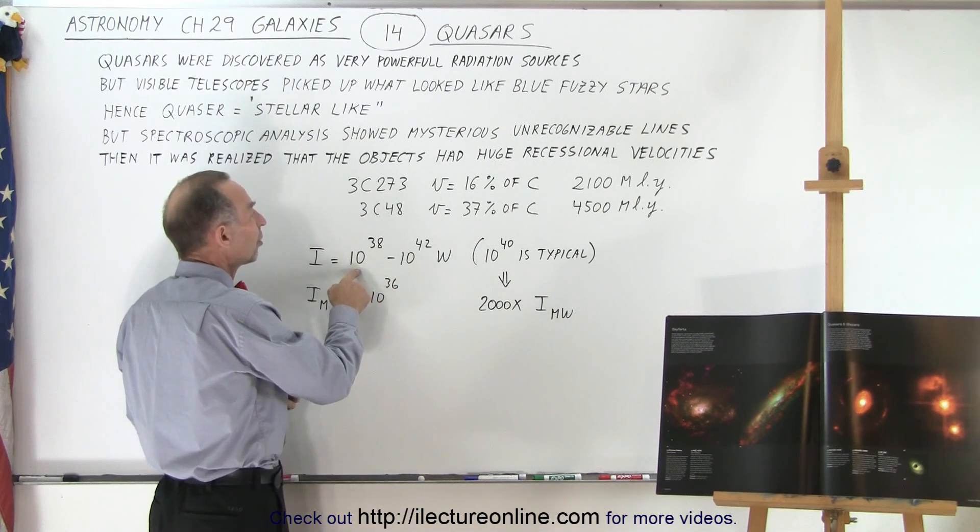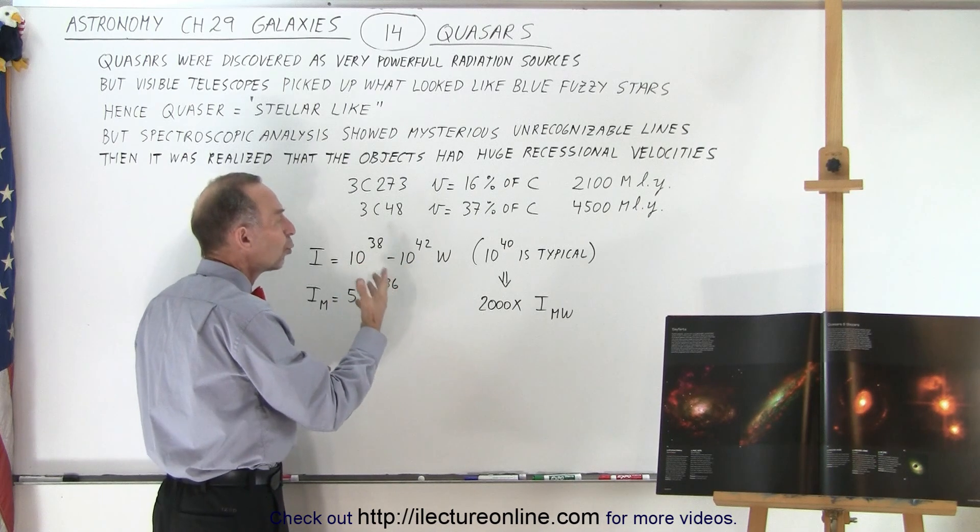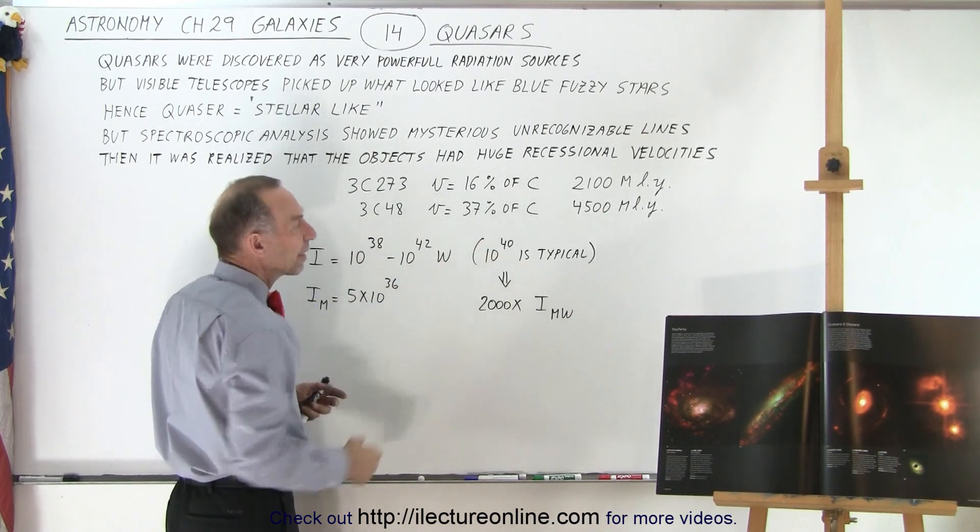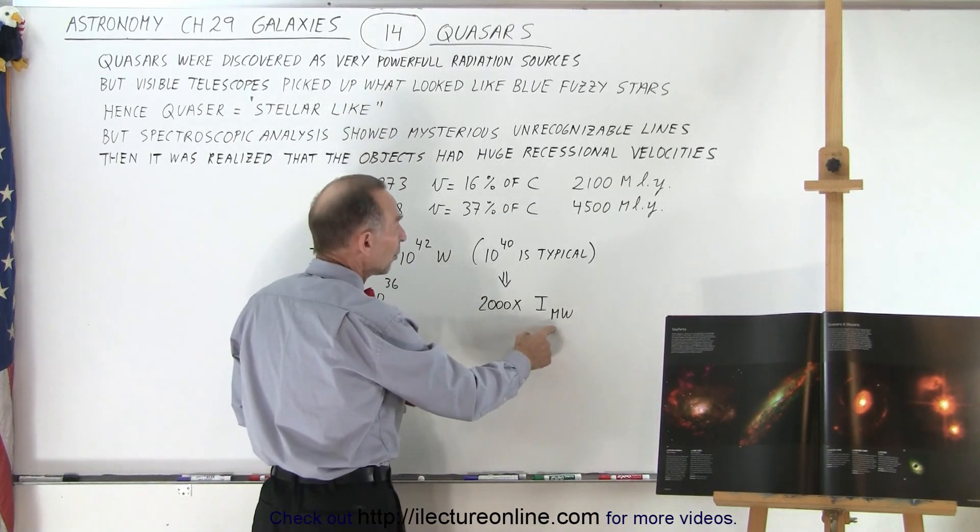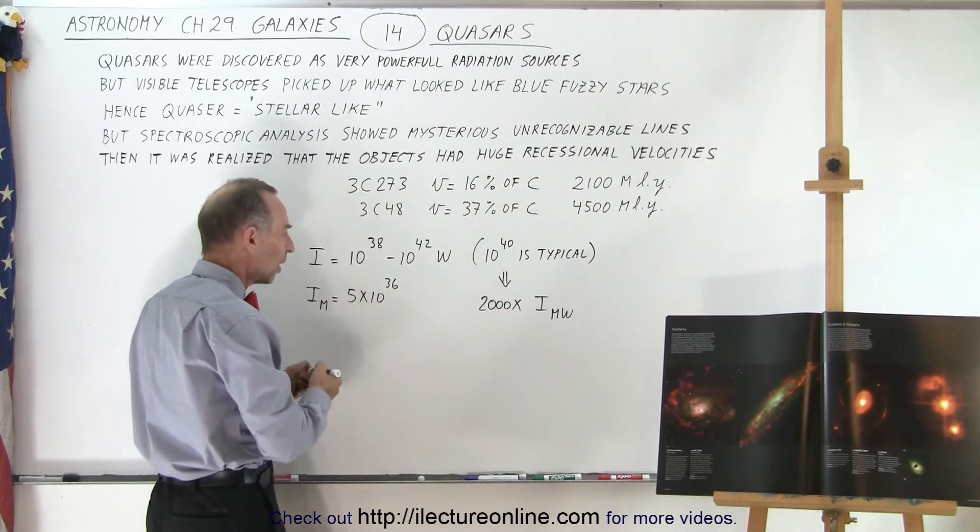The intensity was anywhere from 10 to the 38 to 10 to the 42 watts, typically about 10 to the 40th. If you compare that to the intensity of the Milky Way, which is about 5 times 10 to the 36 watts...